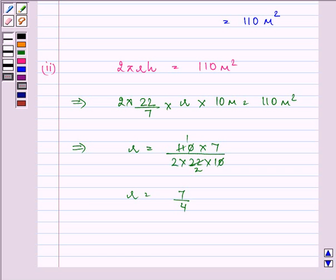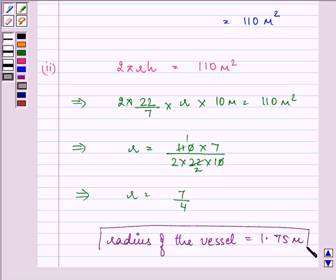So that implies radius of the vessel is 7/4, that is 1.75 meters. So this is the answer to the second part.